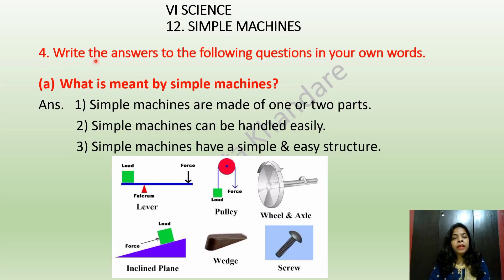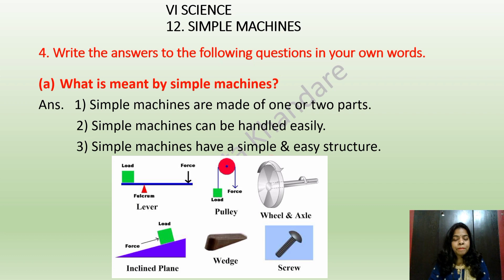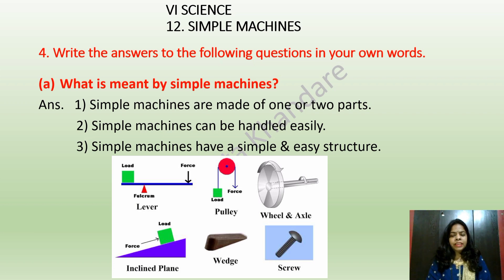Question number four: what is meant by simple machines? Simple machines are made of one or two parts. Simple machines can be handled easily and have a simple and easy structure. Anything which has a simple structure and simple functioning is a simple machine. For example, a knife is a simple machine.